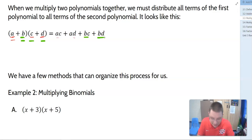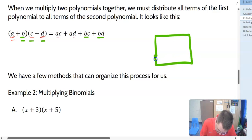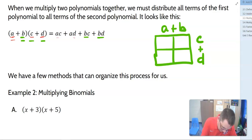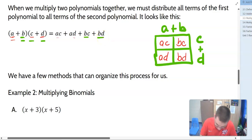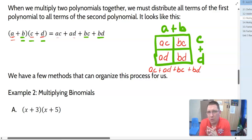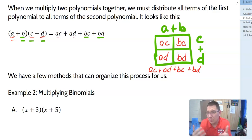Another way to look at this is the box method. We draw our box and place A plus B times C plus D. Multiplying in: A times C is AC, B times C is BC, A times D is AD, B times D is BD. We see all four terms — AC, BC, AD, and BD — in the final answer as we add them together: AC plus AD plus BC plus BD. Remember that addition is commutative, so we can switch the order to combine like terms.